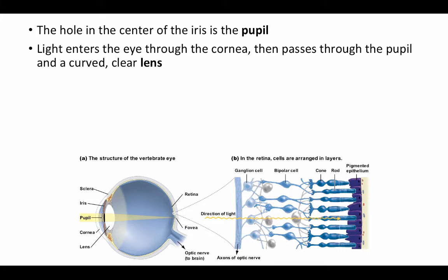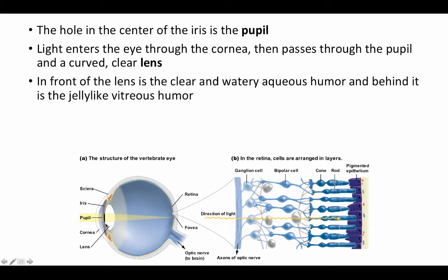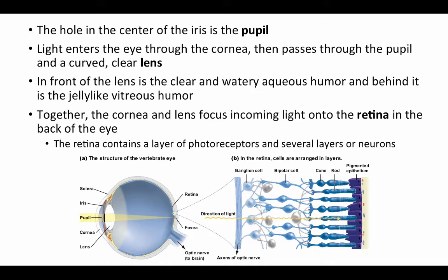Light enters the eye through the cornea, passing straight through this clear connective tissue, then passes through the pupil, and then a curved, clear lens right behind the pupil. In front of the lens is a clear and watery substance called the aqueous humor — a fluid-filled compartment — and behind the lens is a jelly-like compartment called the vitreous humor. All of this is transparent, so the light passes right through it. Together, the cornea and lens focus incoming light onto the retina in the back of the eye.